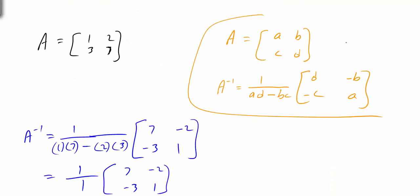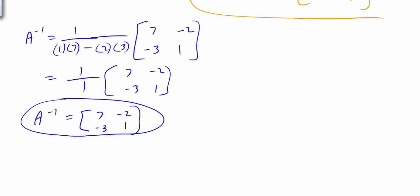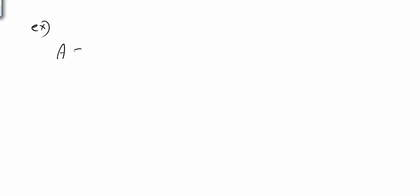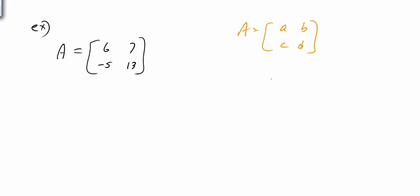This formula only works for a 2 by 2 matrix. Let's look at using it one more time with A equal to [6, 7, negative 5, 13]. Using the same formula for [A, B, C, D], the inverse is 1 over (A times D minus B times C), switching D and A and taking the negative of the other two.